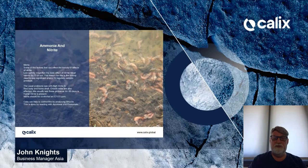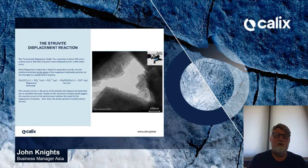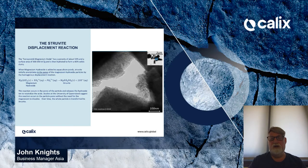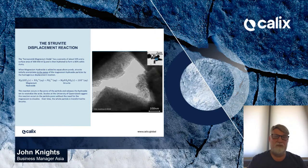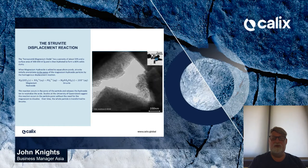Aquacal can help to control this by producing struvite. This is done by the reaction of ammonia and phosphate in the water system — called the struvite displacement reaction. On the right we see the honeycomb structure on the surface of magnesium oxide particles. This is formed when we hydrate to magnesium hydroxide, which is Aquacal. This honeycomb magnesium oxide has a porosity of about 50%, which is very important because we need to get into that particle for the reaction to occur.